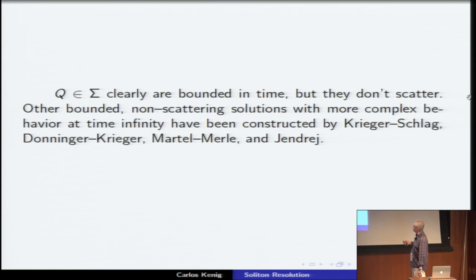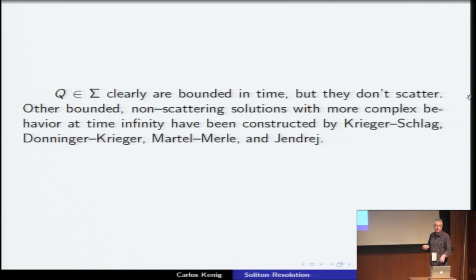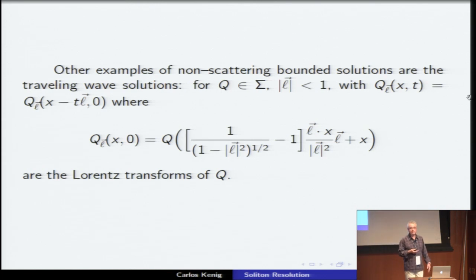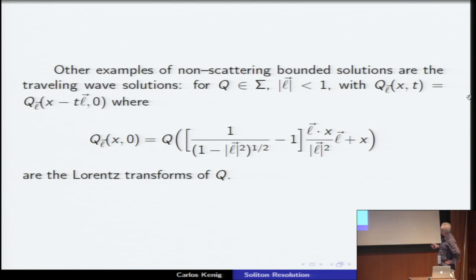These static solutions are bounded in time and don't scatter. There are other constructions of bounded non-scattering solutions with much more complex behavior at time infinity, constructed by Krieger–Schlag, Donninger–Krieger, and more recently Martel–Merle–Jendrej. There are also traveling wave solutions: for the soliton resolution, we need traveling waves. The solutions to the elliptic equation are traveling waves that don't travel — they stay put, traveling with speed zero.